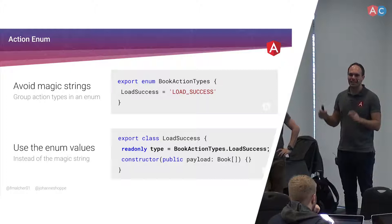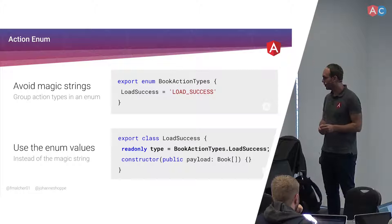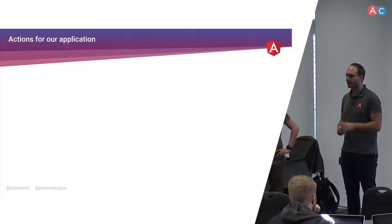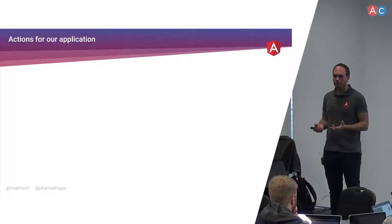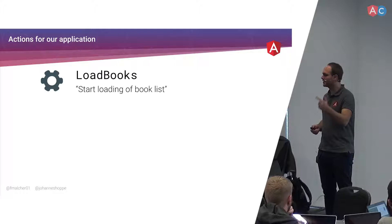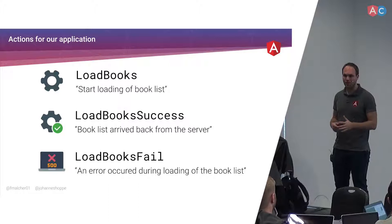Before coding, let's plan what actions we need for our application. First: LoadBooks — the command to start loading the book list. Second: LoadBooksSuccess — when books come back from the server successfully, carrying a book list payload. Third: LoadBooksFail — when loading fails, which can happen especially with HTTP. Those are the first three actions of our application.